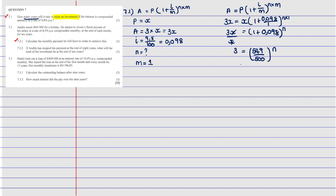To change this, we need to convert it to a log — this is going to be very easy. N is going to be on the other side, and you're going to say log base (549/500) of 3. You type this into your calculator and you find that N equals 11.75. So N is going to be equals to 12 — when finding the number of years, you always round up.